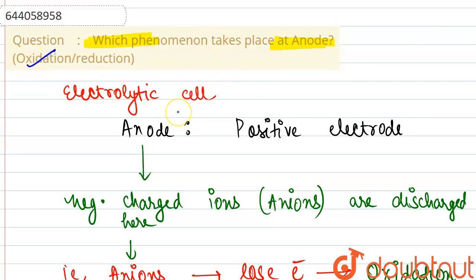However, if we talk about a galvanic cell, then in that case anode is considered negative and cathode is positive. But here we are talking about the electrolytic cell specifically.